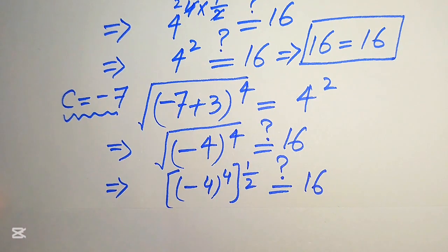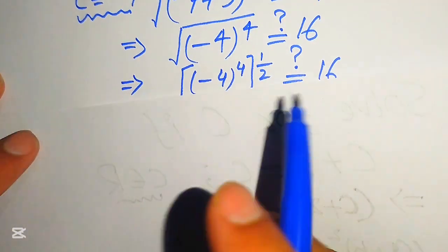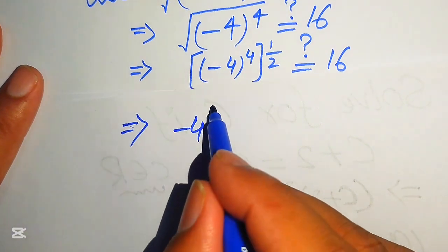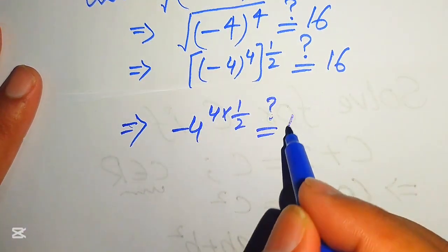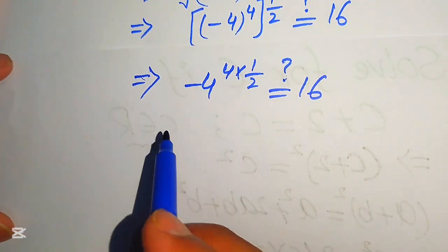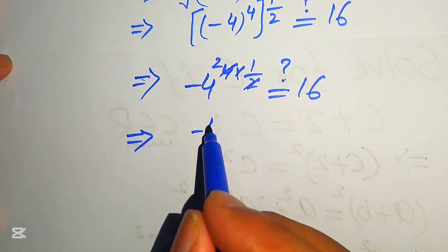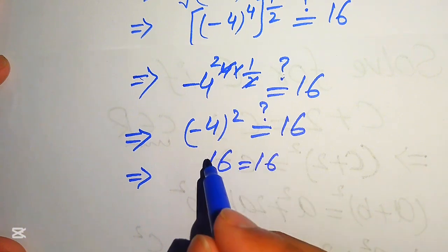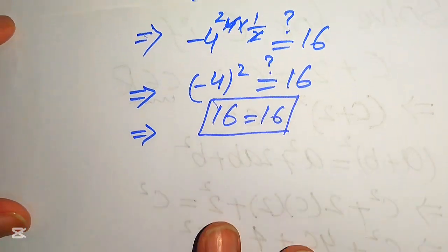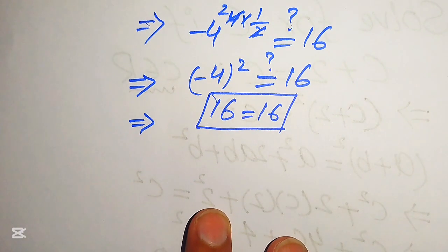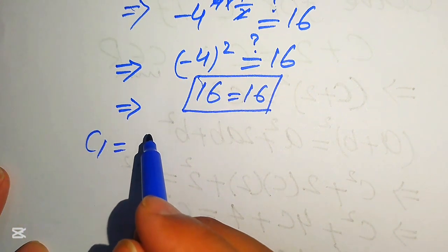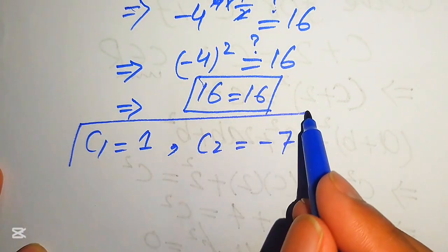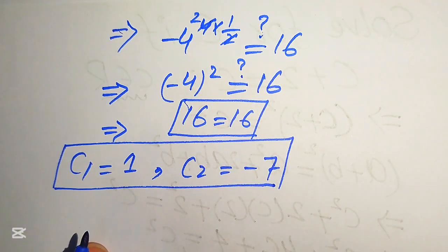Applying the exponent law and multiplying the exponents, we get (minus 4) to the power of 4 times 1 over 2, which simplifies to (minus 4) squared equals 16. Since 16 equals 16, the second value c equals minus 7 also satisfies the equation. Finally, the two real roots of the given equation are c₁ equals 1 and c₂ equals minus 7. Thank you for watching — please subscribe for more exciting videos.